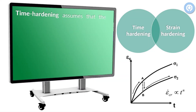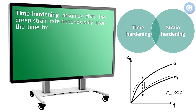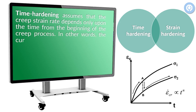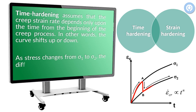Time hardening assumes that the creep strain rate depends only upon the time from the beginning of the creep process. In other words, the curve shifts up and down. As stress changes from sigma 1 to sigma 2, the different creep rates are calculated at points A to B.